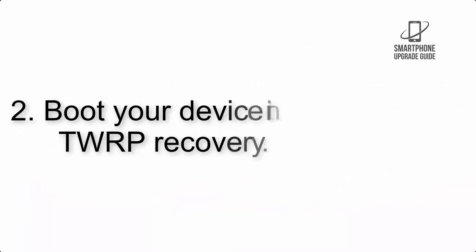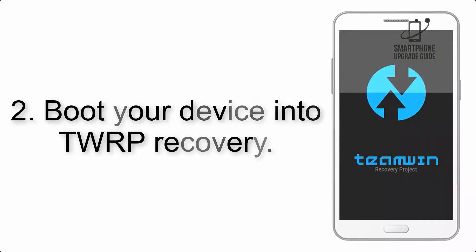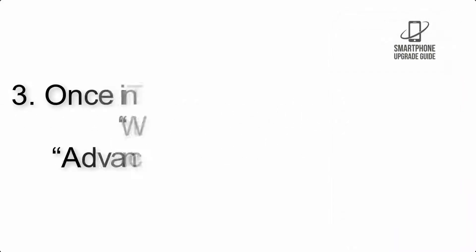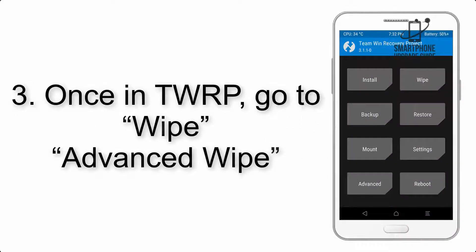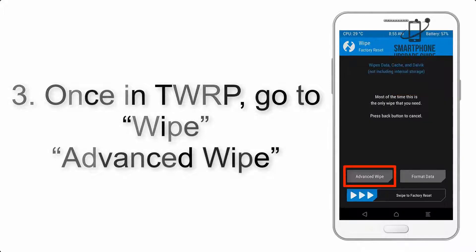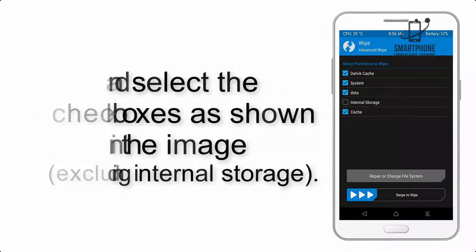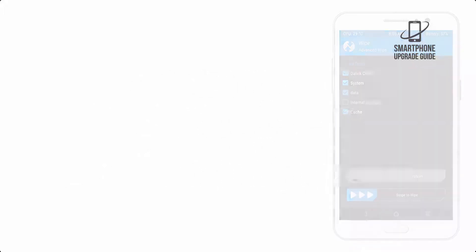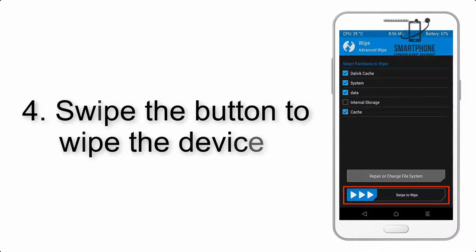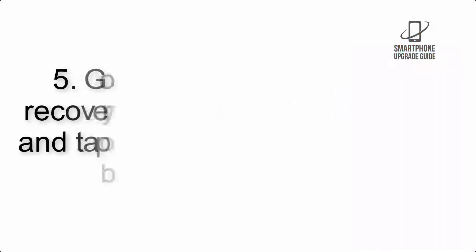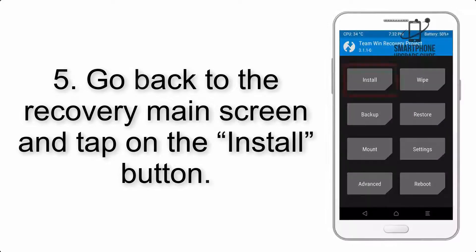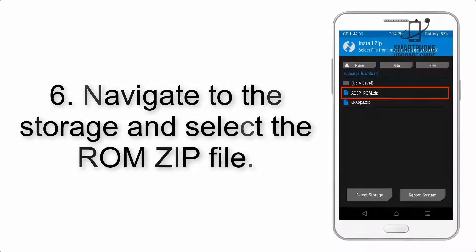Step 2: Boot your device into TWRP recovery. Once in TWRP, click on Advanced Wipe and select the checkboxes as shown in the image, excluding internal storage. Step 4: Swipe the button to wipe the device.